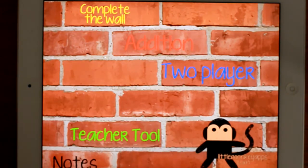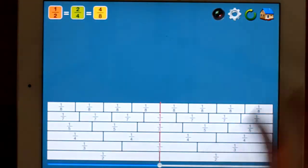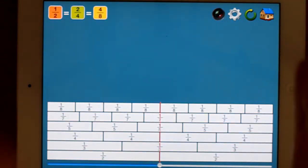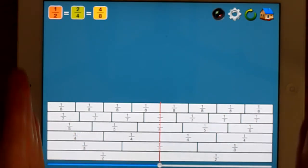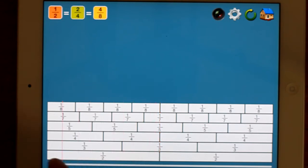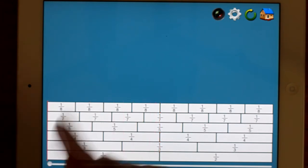Let's have a little look at the teacher tool. So a fraction wall is basically a wall of bricks that's divided into fractions. Obviously, the wall width is a whole. So here we've got halves, thirds, quarters, fifths, sevenths, and eighths.